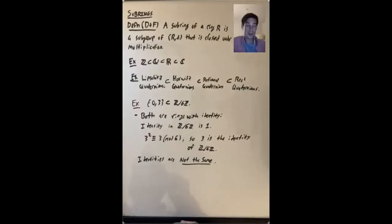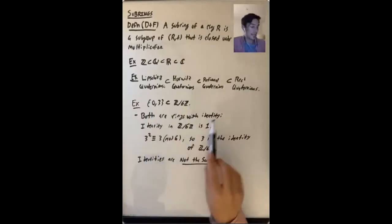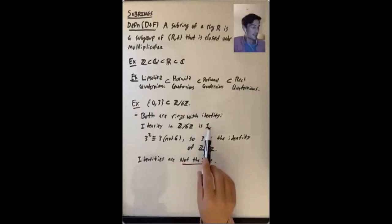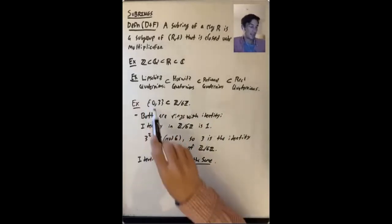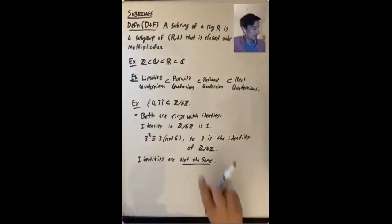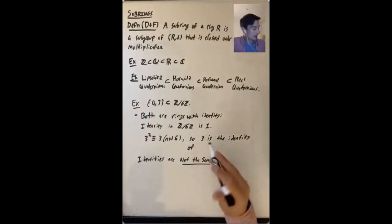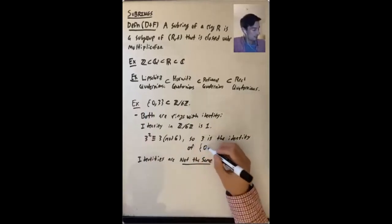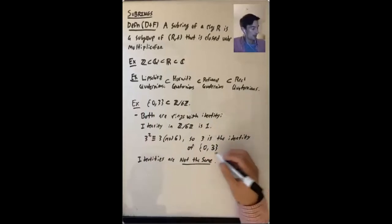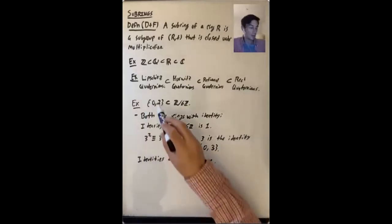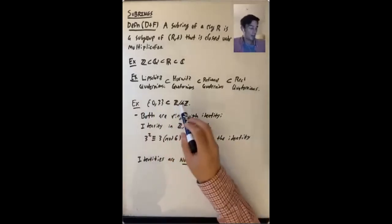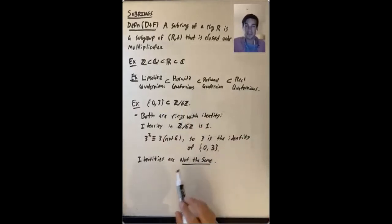Both of these are subrings with identity. The identity in Z mod 6Z is 1. And because 3 squared equals 3 in mod 6, that means 3 is the identity of this subring that just consists of {0, 3} inside of Z mod 6Z. They both have an identity, but the identities are not the same. This is very weird.